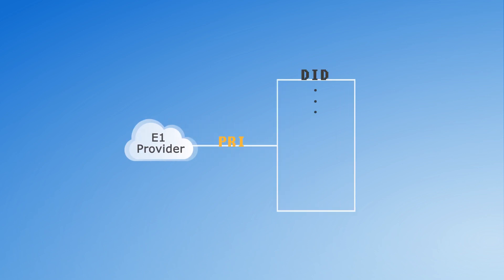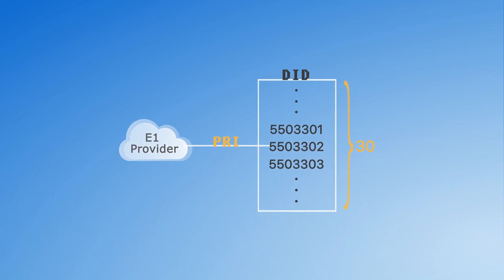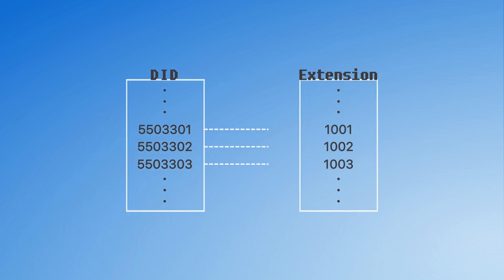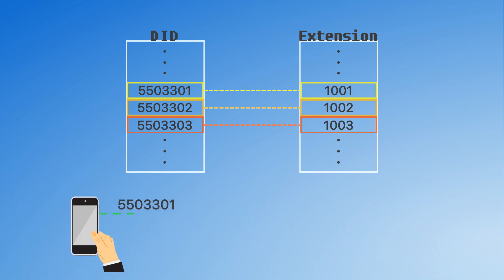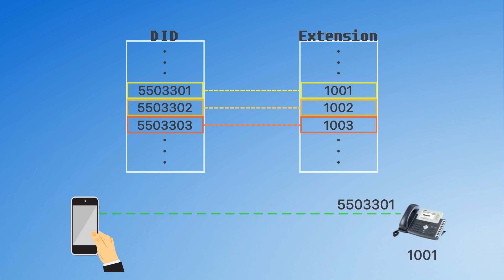An E1 line can provide up to 30 DID numbers. When using the E1 trunk with our telephone system, each DID number can be bound with an internal extension directly, so an external caller can dial the DID number to reach a specific extension. For example, if we've applied for 3 DID numbers bound to 3 extensions, when an external party calls 550-3301, they'll be directed to extension 1001. Conversely, if extension 1001 calls an external number, the caller ID displayed will be 550-3301, matching the DID number.